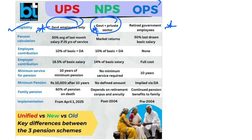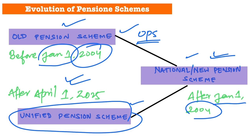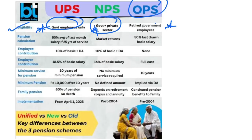And the Old Pension Scheme, which was in effect before January 1, 2004, covered retired government employees — not private employees.